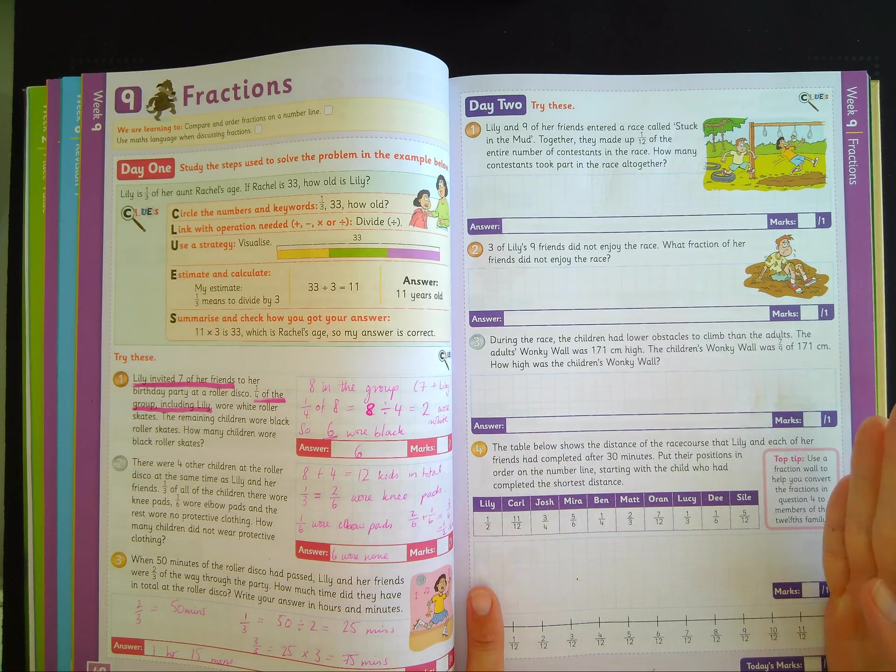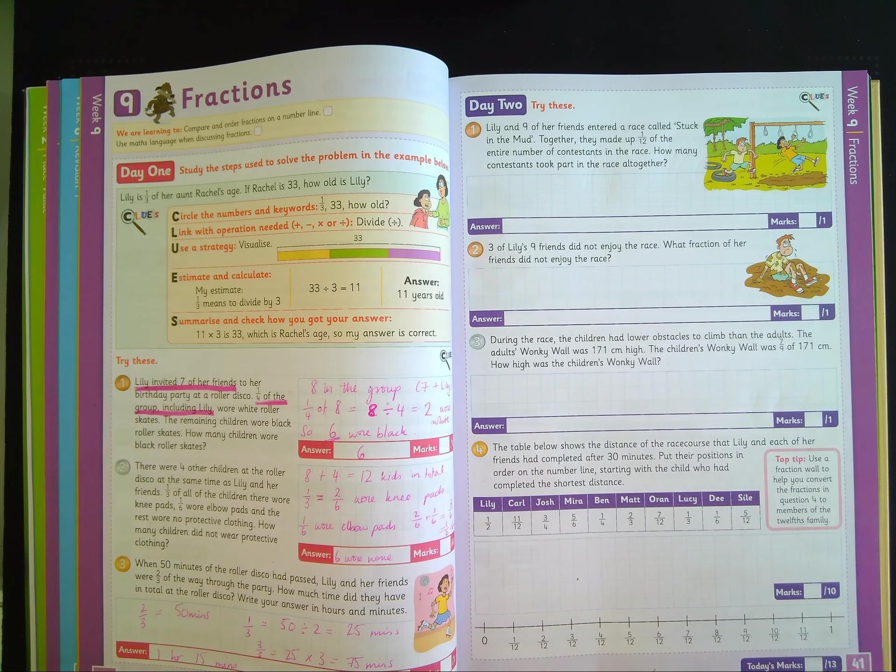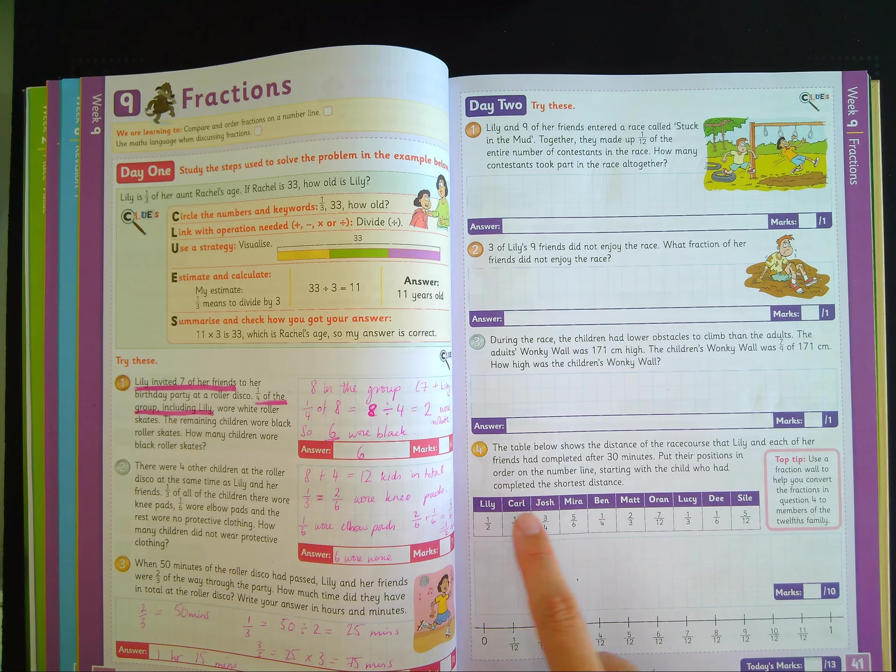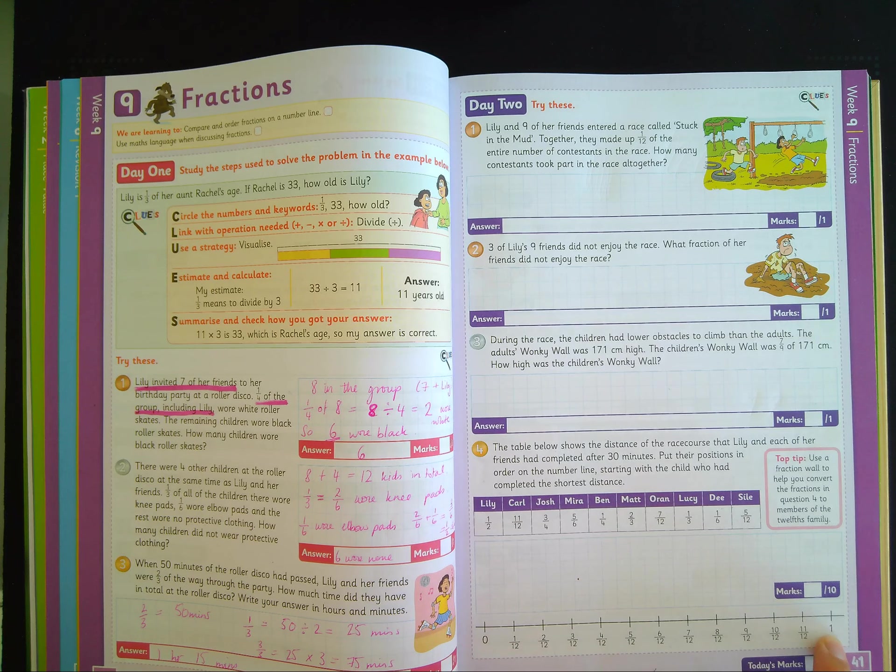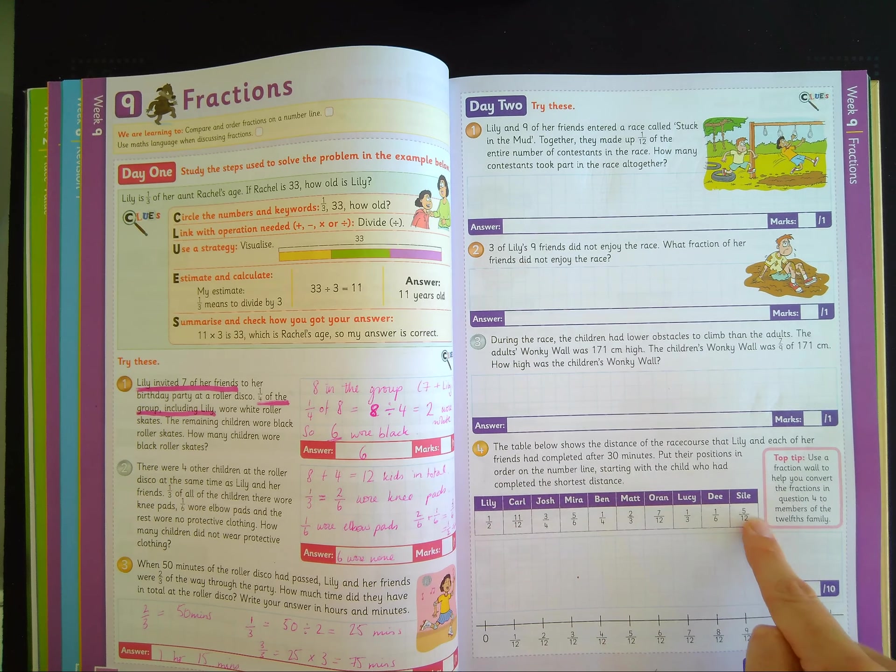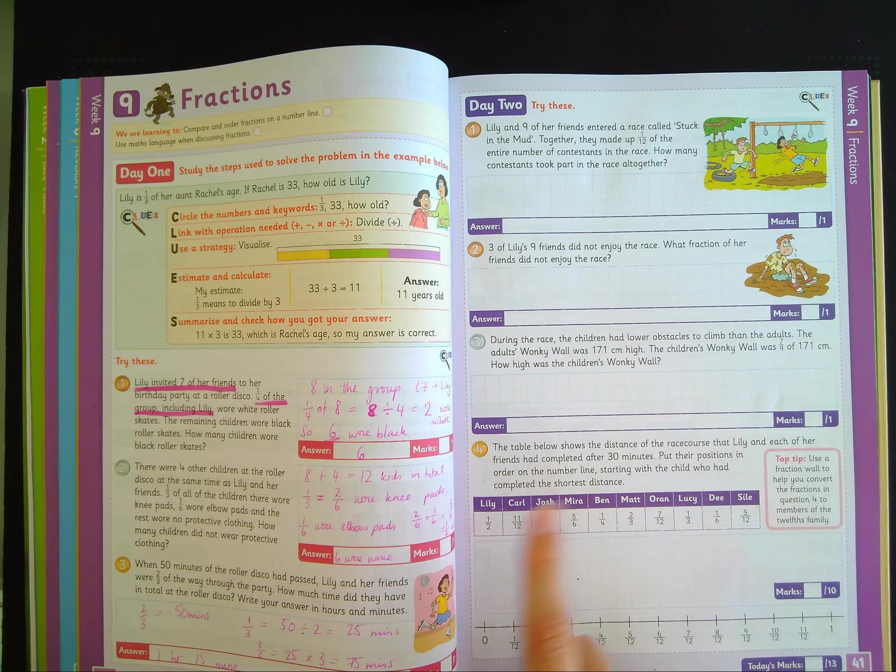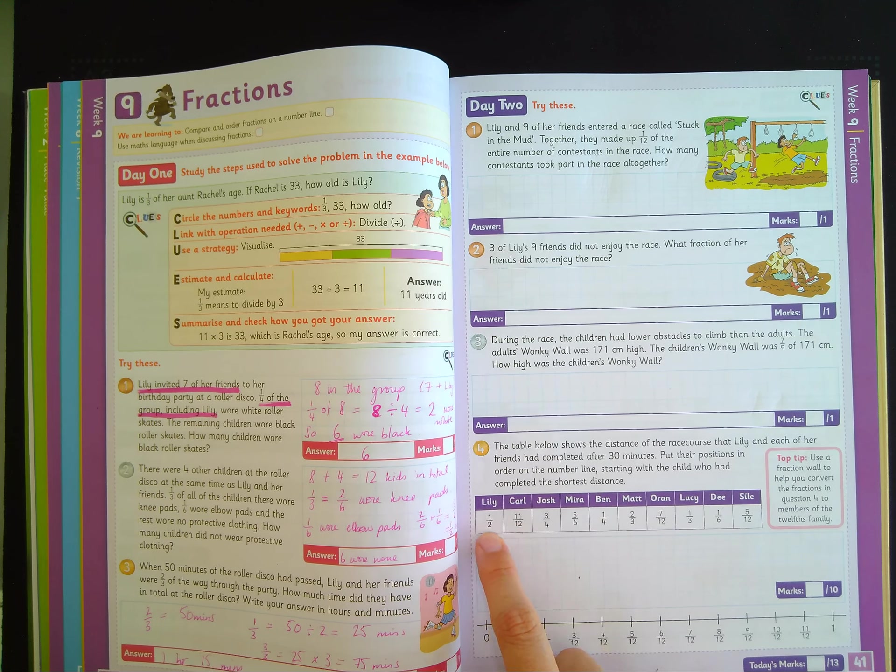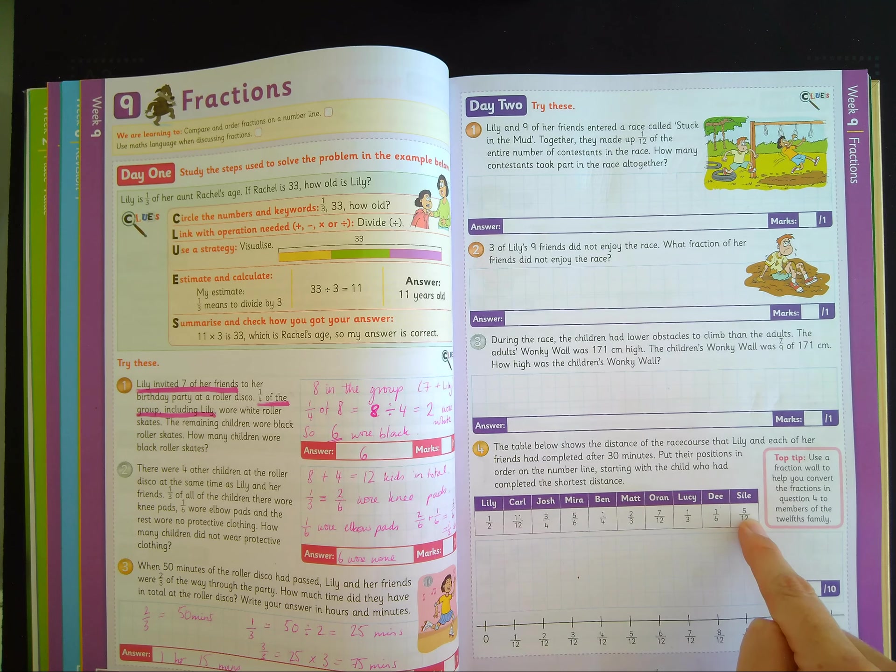So imagine this is the finish line, and this is the start line, and we're seeing who's closer to the finish line. It's just the order. We're interested in the order. Now, down here, all the fractions are expressed in twelfths, and up here, some of them are, but some of them aren't. What you need to do is to change these fractions into an equivalent fraction in twelfths.